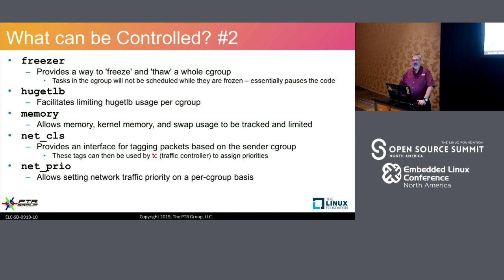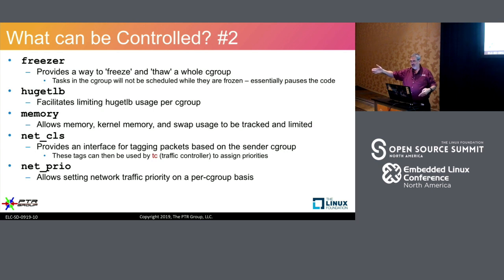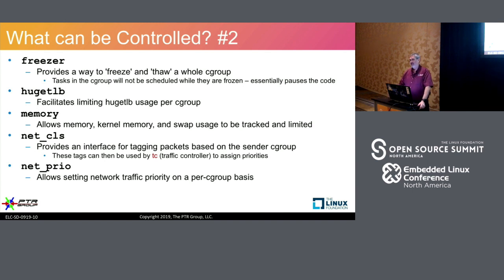The network priority option lets you prioritize one user's application over another's for network traffic — if both are generating traffic, this one goes first. Now, the Freezer: it's like putting your laptop to sleep. With Freezer, I can tell all processes in a CGroup to go to sleep now, shut them off, move them to another processor, and wake them back up — it's like process checkpoint-restart. KVM actually uses the Freezer interface when migrating VMs from one place to another.